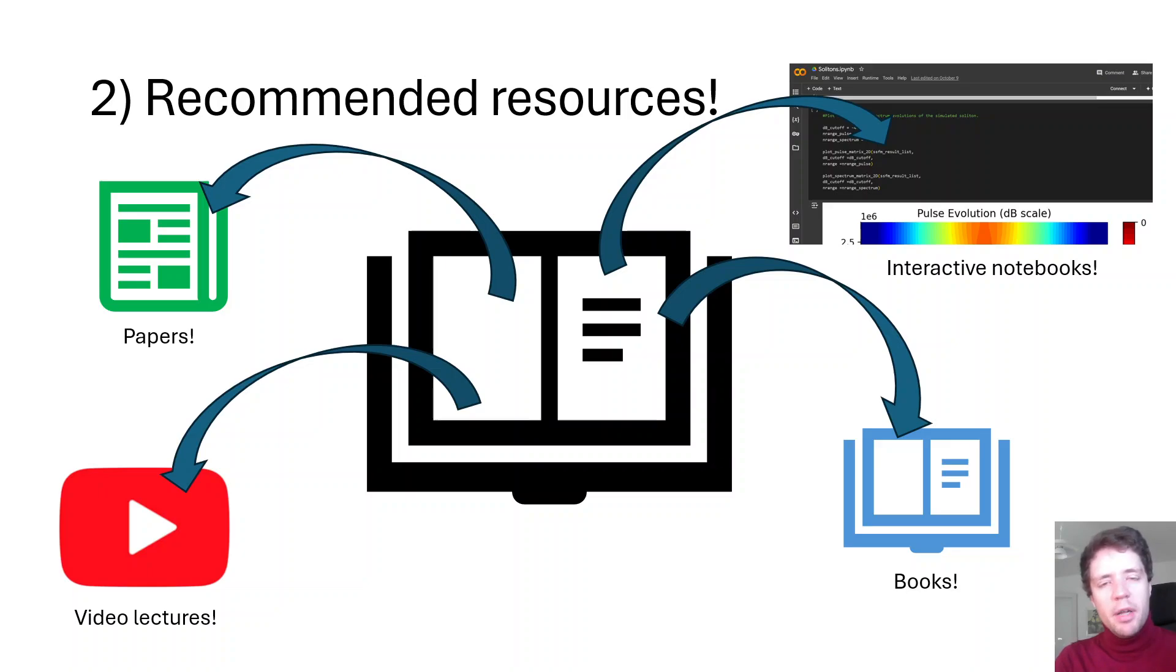They all contain my custom code for solving the nonlinear Schrödinger equation using the so-called split-step Fourier method, and the idea is to give you a chance to play around with different parameters that go into this equation in isolation. See how, for example, the propagation of solitons changes if you add self-steepening, or how self-phase modulation changes if you use a different pulse shape. All these things you can try actively with these notebooks, so I highly recommend that you check them out when you download and read the ebook.